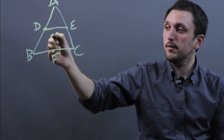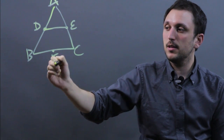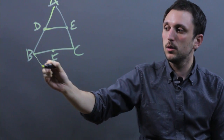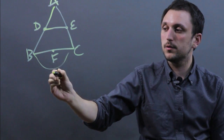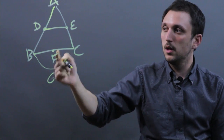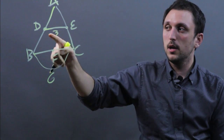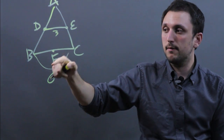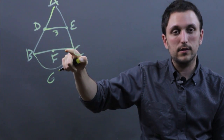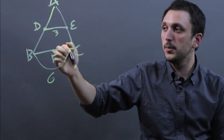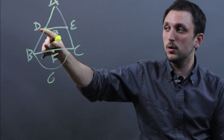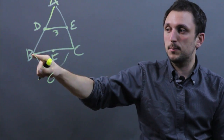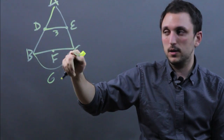Now, if BC were 6, then DE has to be 3. The mid-segment is always half of the third side of the triangle. Also, DE is parallel to BC.